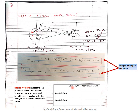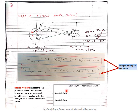You should solve the same problem for the cross belt drive and present it in tabular form. Write the exact length and approximate length for open belt drive, and the same for cross belt drive, and conclude that the length for cross belt drive is more than open belt drive. This will be uploaded on Google Classroom.